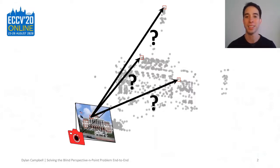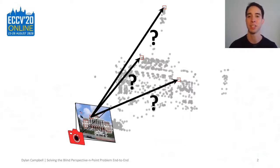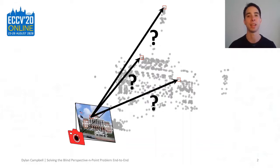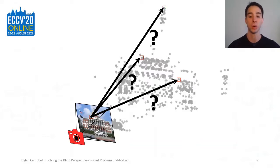For example, a point set captured by a laser scanner has no visual information associated with it, making the correspondence problem challenging. Other relevant situations include day-night localisation, where visual features change, and privacy-preserving localisation. Therefore, we need to solve for pose and correspondences jointly.